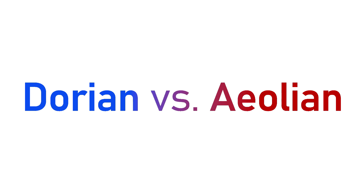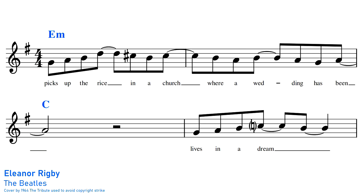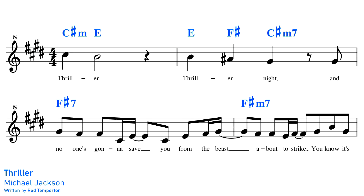A great way to bring out the character of Dorian is to directly contrast it with the natural minor, otherwise known as the Aeolian mode. During the verse of the Beatles' Eleanor Rigby, Paul initially sings the Dorian raised sixth, the C sharp, but just one line later he now sings the C natural, shifting the tonality from E Dorian to E Aeolian. This use of both the bright Dorian and the darker Aeolian sound in the same line contributes to Eleanor Rigby's unsettled, eerie mood. Likewise, Michael Jackson's Thriller, written by Rod Templeton, is largely in C sharp Dorian, as we can see from the A sharp in the melody and in this F sharp major chord.